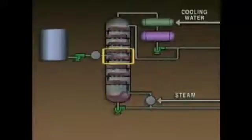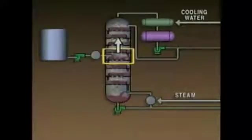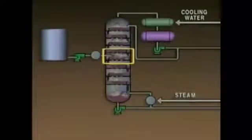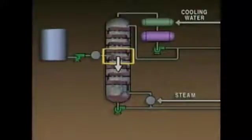If the temperature at the feed point is higher than it should be, more of the heavier components will vaporize and move up the tower instead of moving down the tower as a liquid. On the other hand, if the feed point temperature is too low, less of the lighter components will vaporize and more lighter components will end up in the bottom of the tower.